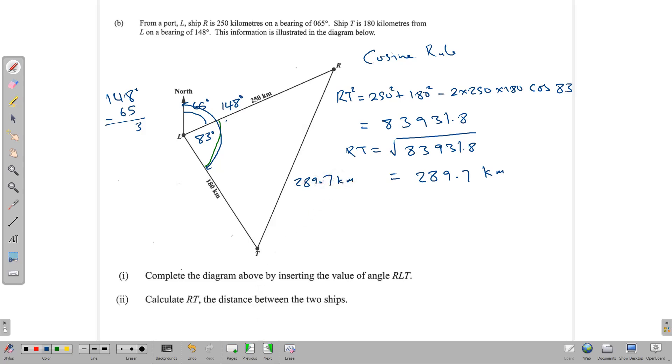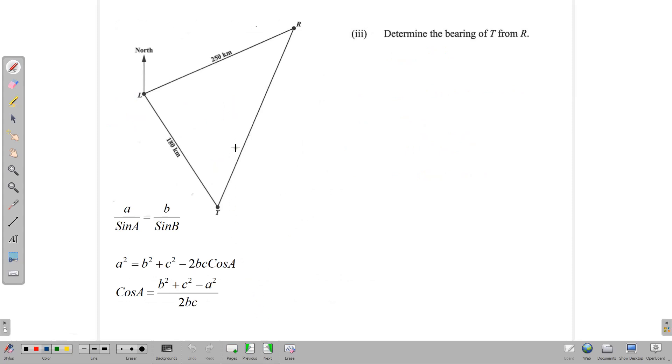The third part requires us to find the bearing of T from R. This is T, and we want to know the bearing of T from R. First thing we need to do, since we are writing a bearing, is to put in a north line. Because bearings have to be measured from the north line, and the bearing of T measured from R would be this bearing. So we need to find the size of this angle here.